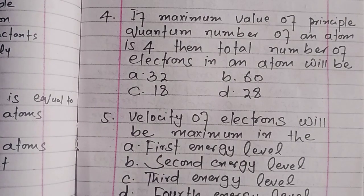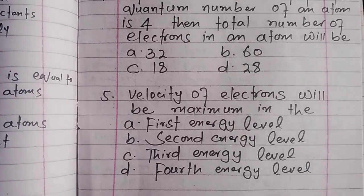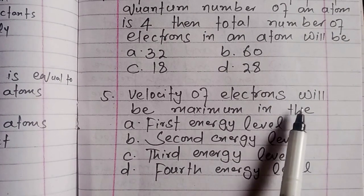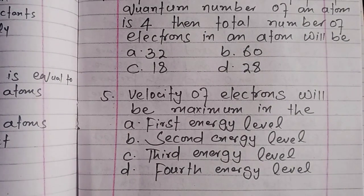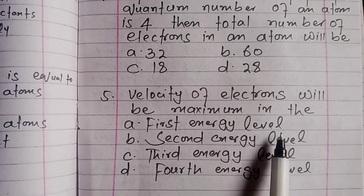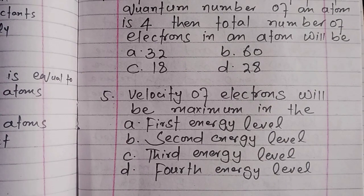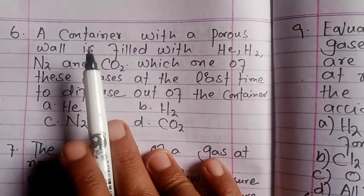Question 5: The velocity of electrons will be maximum in which energy level — the first energy level, second energy level, third energy level, or fourth energy level? In which shell or energy level will the electron velocity be greatest? Think and write your answer.